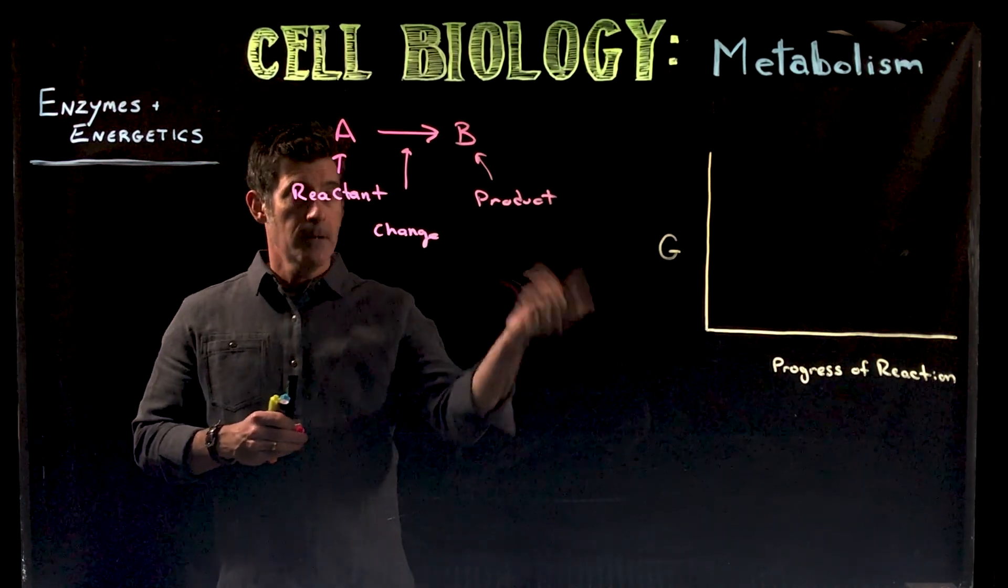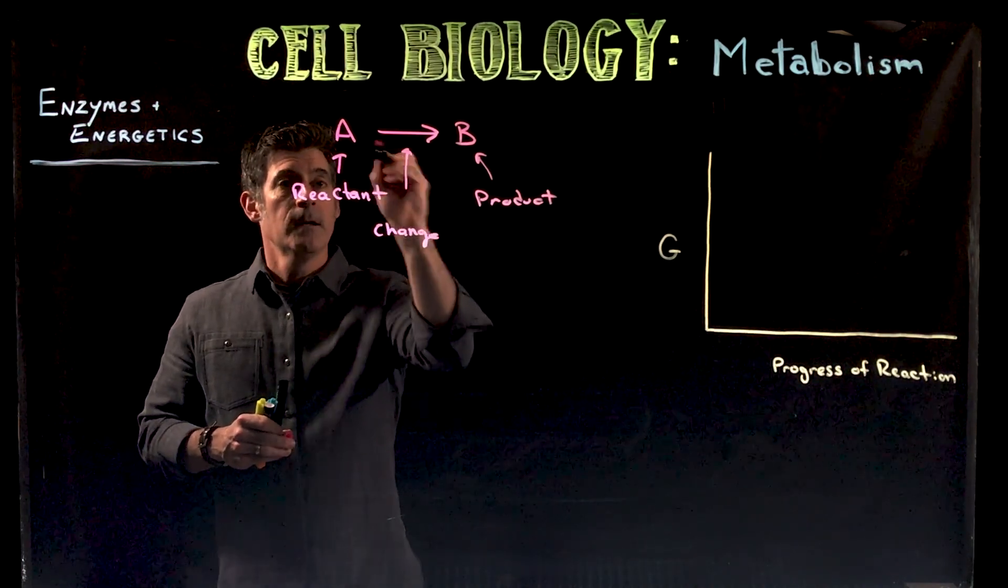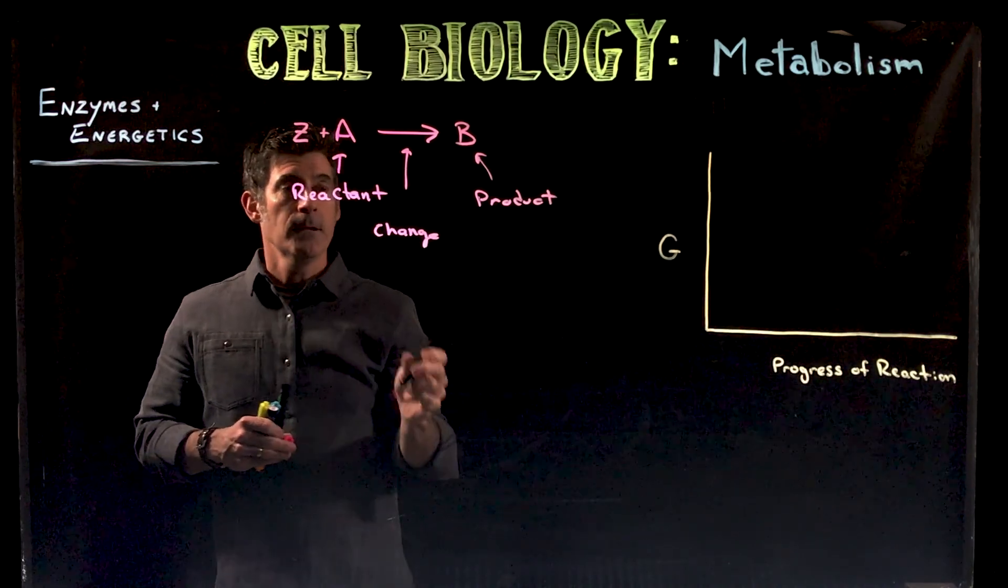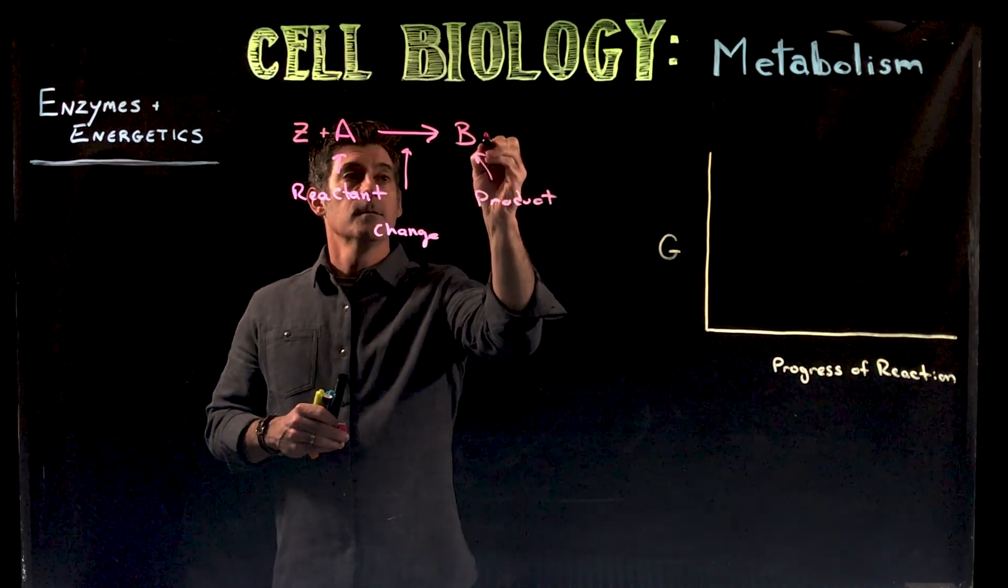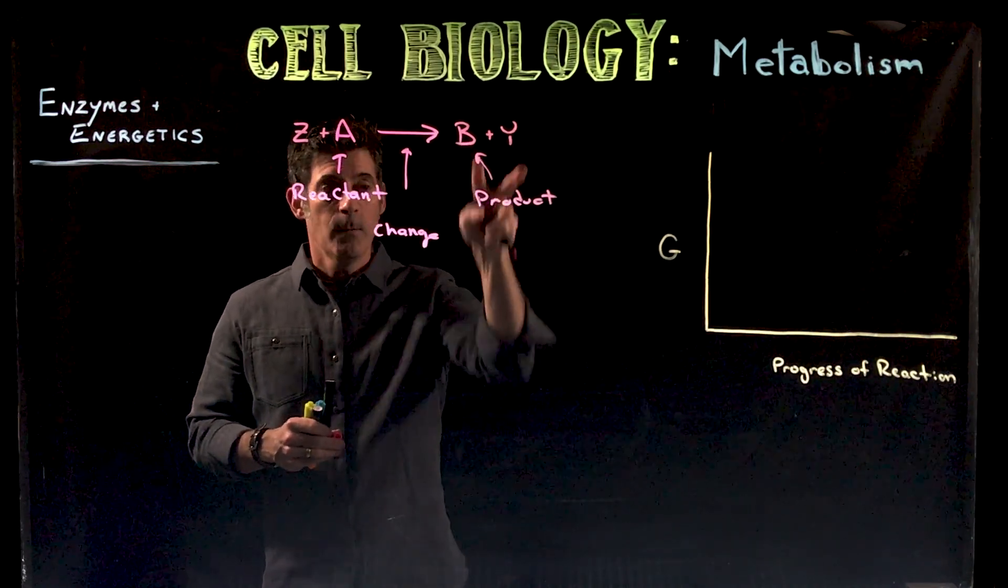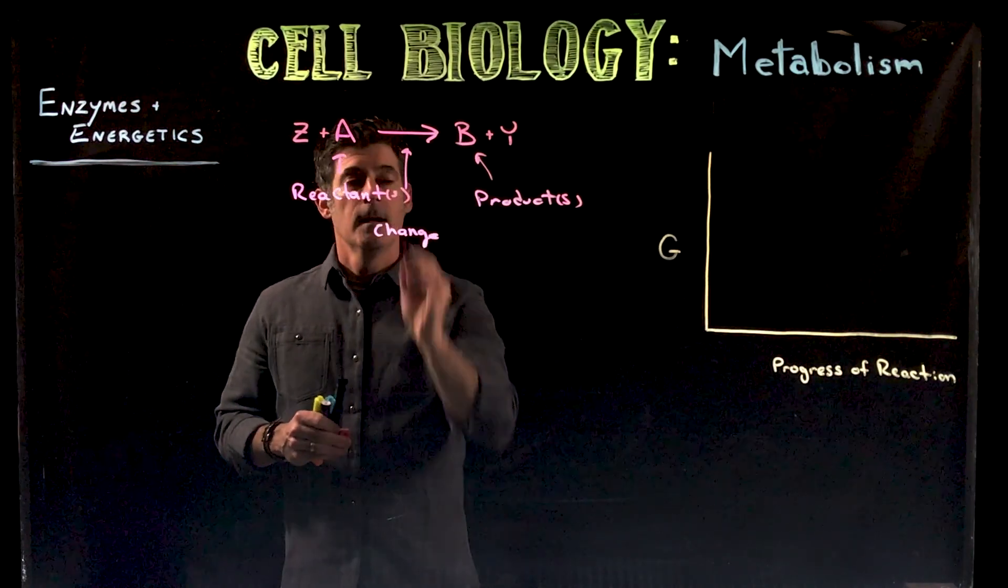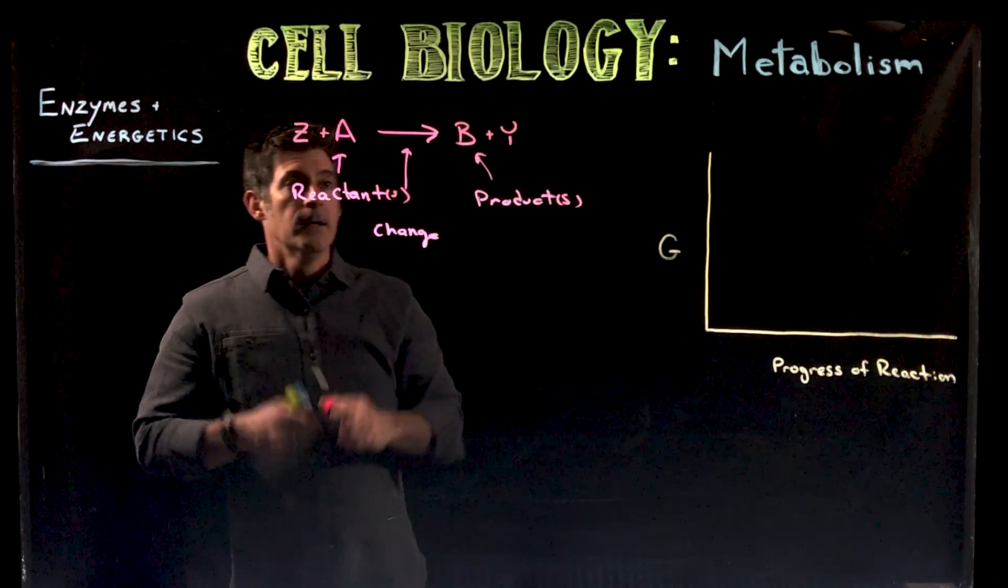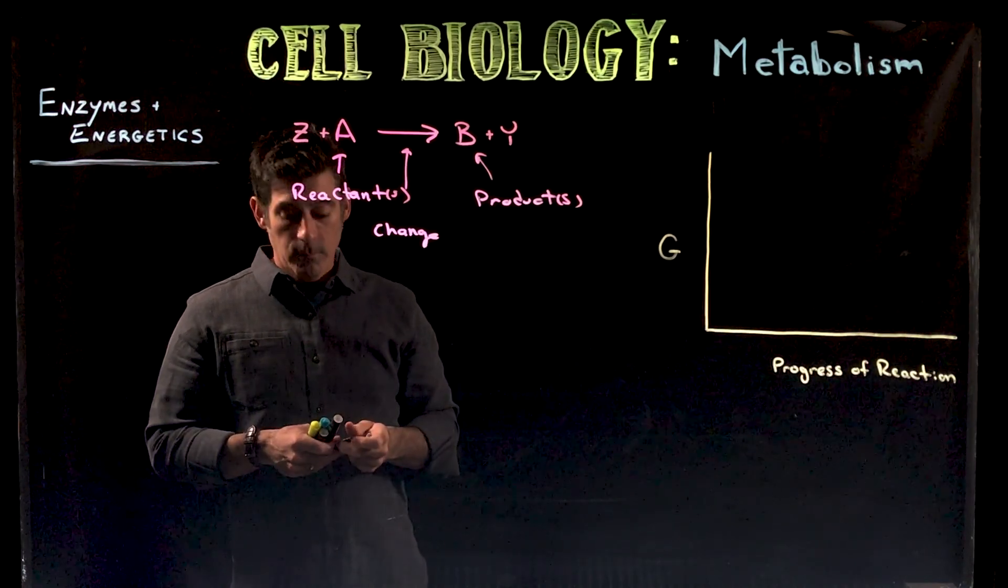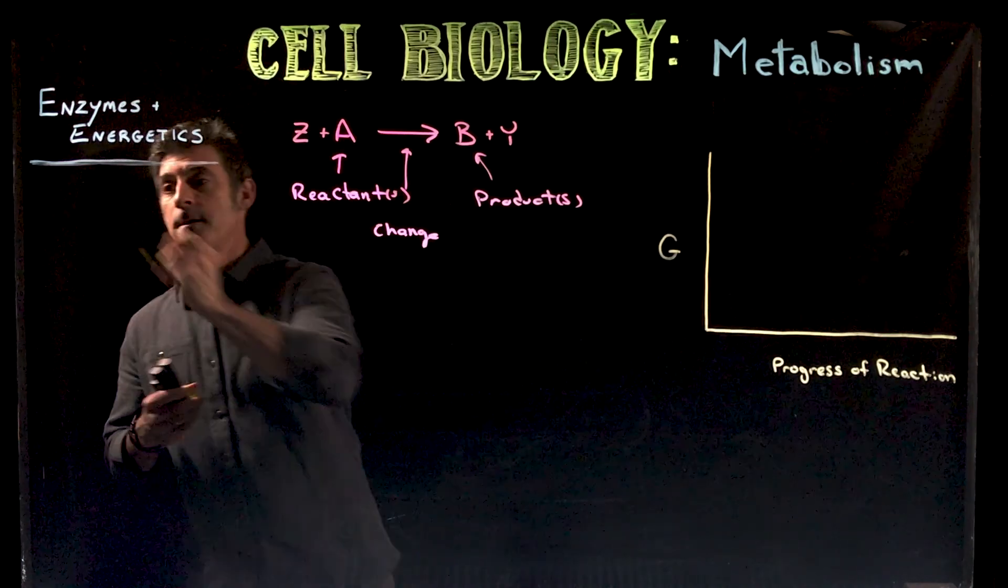Then we have a new molecule that is the product. So the reactant, then the product. There could be multiple reactants, so this could be Z + A equals B + Y. These could be two new molecules as products of the reactants. Those can happen on their own within cells, called spontaneous reactions.